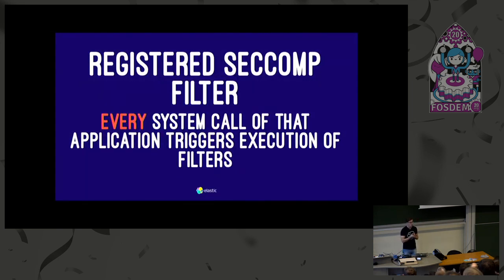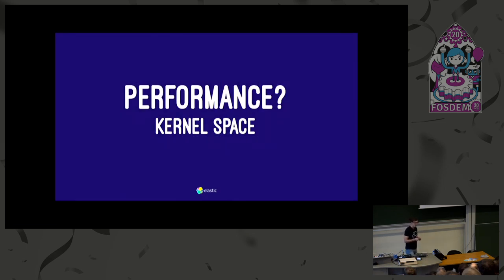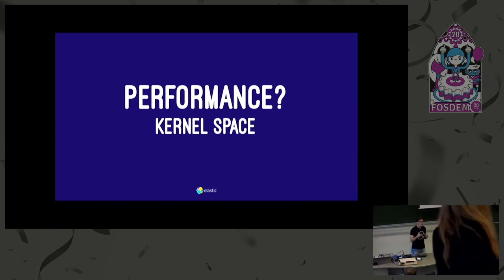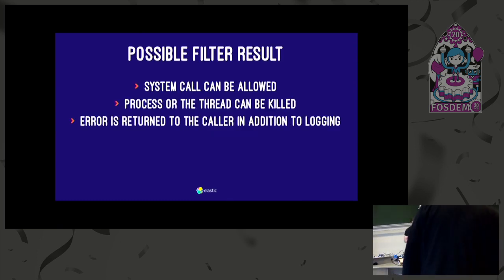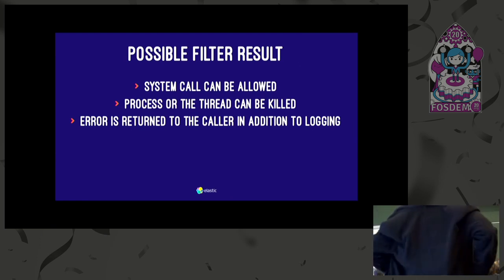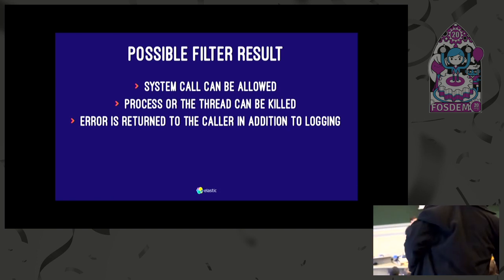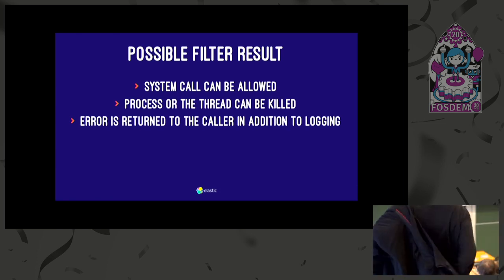Every call that you do, once you have SecComp enabled, will run through that filter. The question that sometimes comes up is whether it's expensive because it's for every system call. Not really, because it runs in the kernel, so you don't have to go to user space for all the calls — it's pretty cheap to actually run those. The results that a call can have: it can be allowed (the good case), a thread or process can be killed, you can also return an error, and log any problems if you run into those.